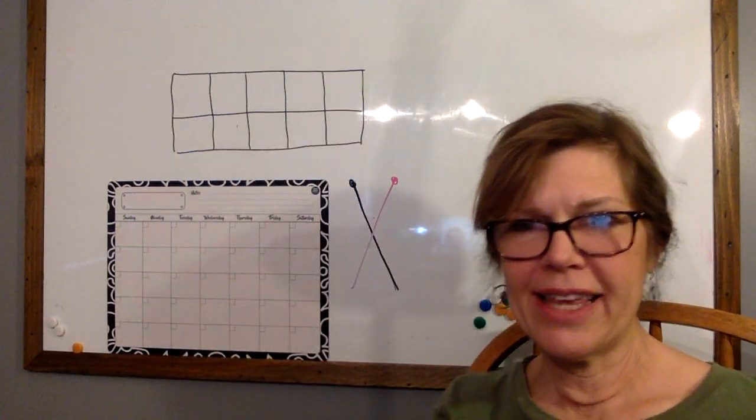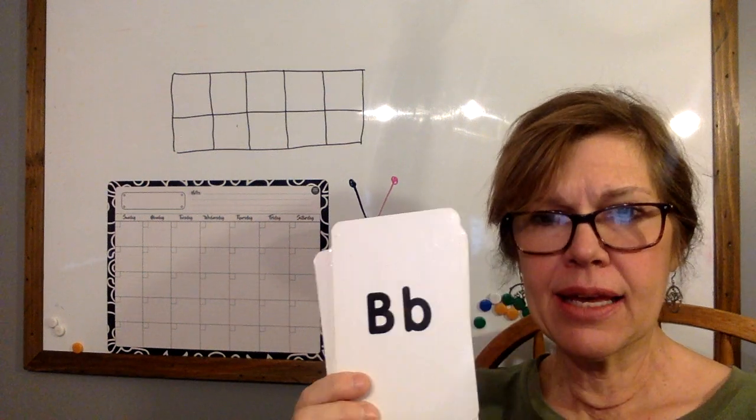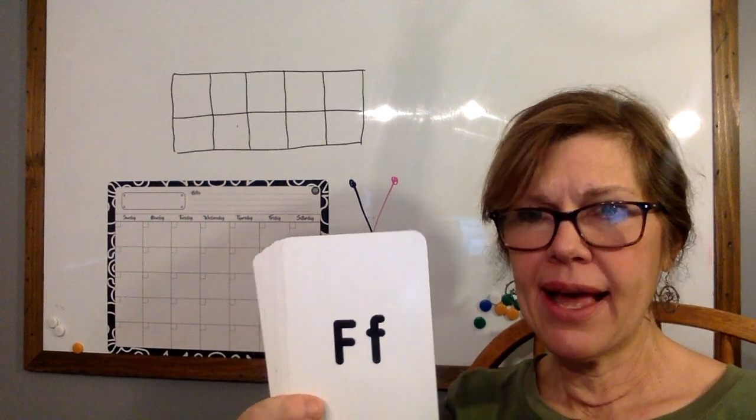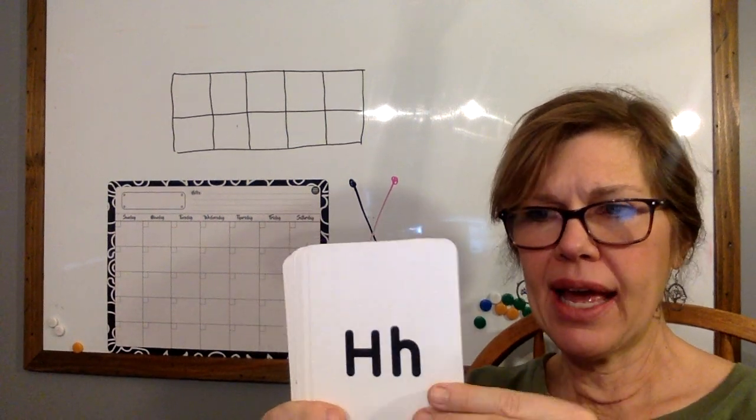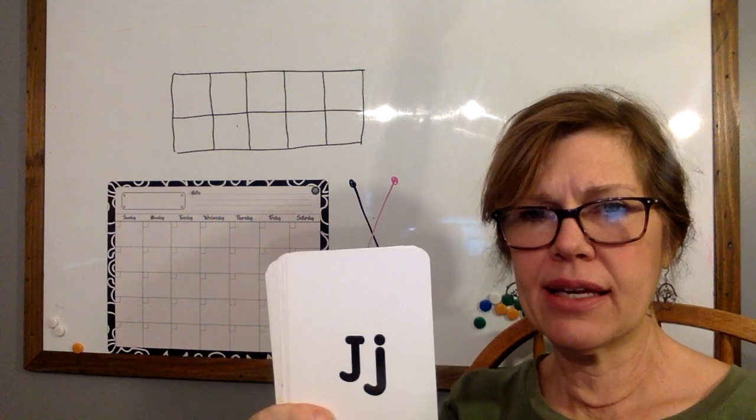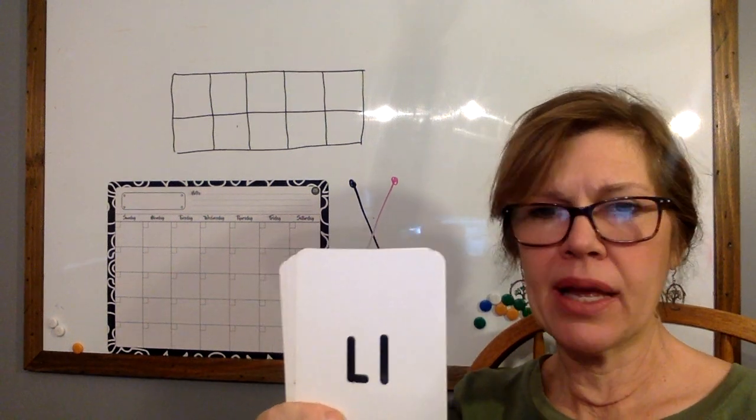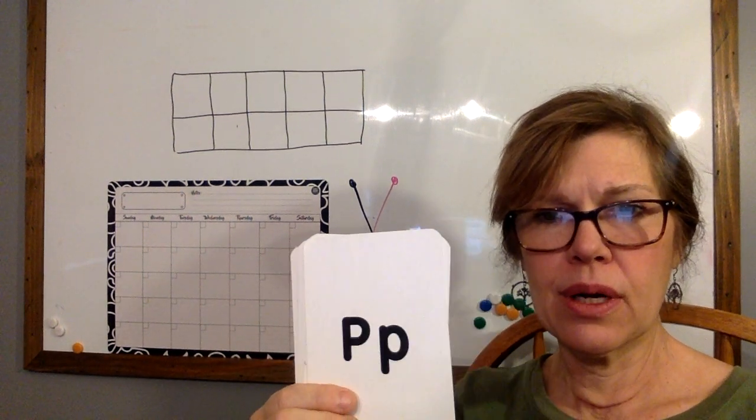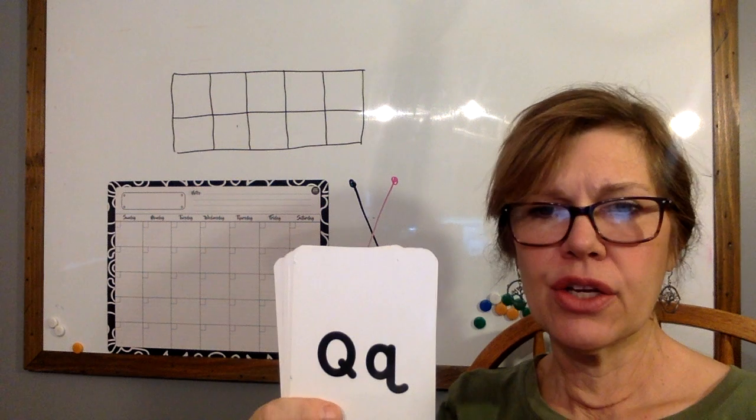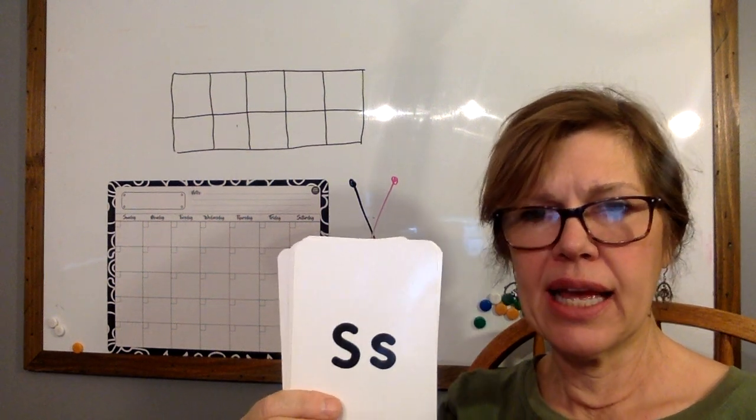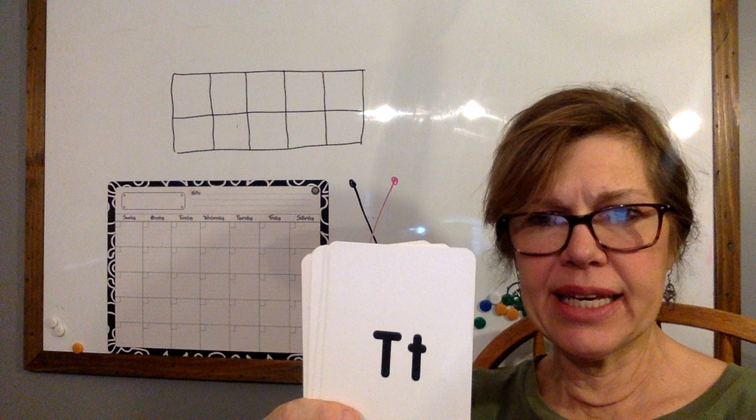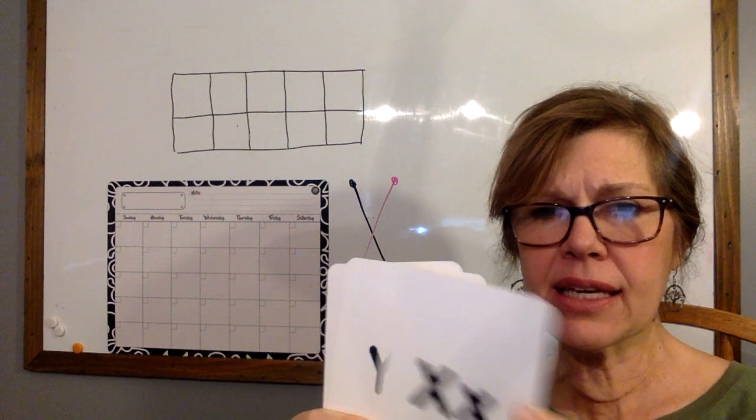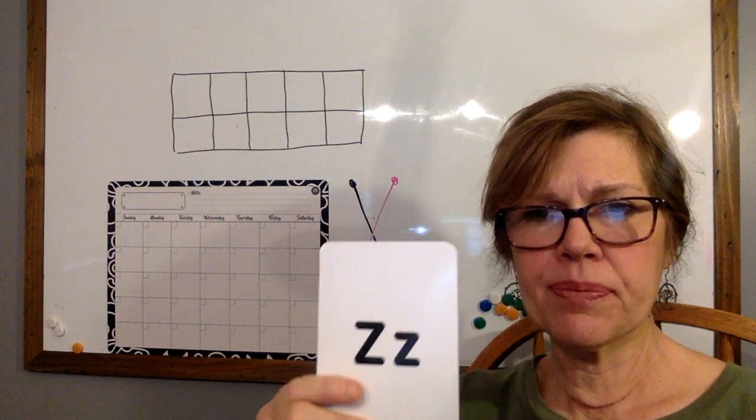Say the ABCs. Say them with me or after me. A, B, C, D, E, F, G, H, I, J, K, L, M, N, O, P, Q, R, S, T, U, V, W, X, Y, Z.